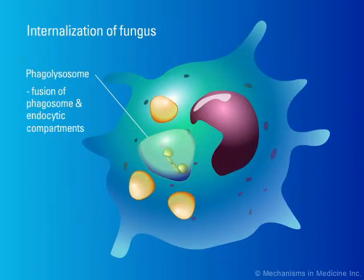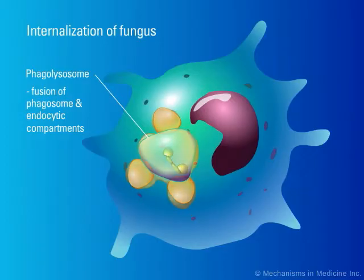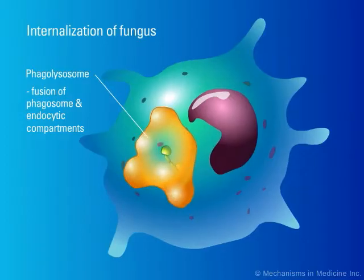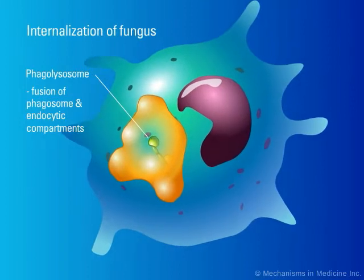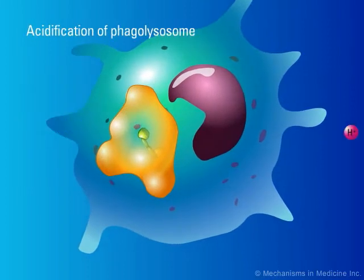Fungi are contained inside phagosomes within phagocytes. Endocytic compartments within phagocytes bind to phagosomes and fuse with them to form phagolysosomes. Phagolysosomes containing fungi are then acidified.